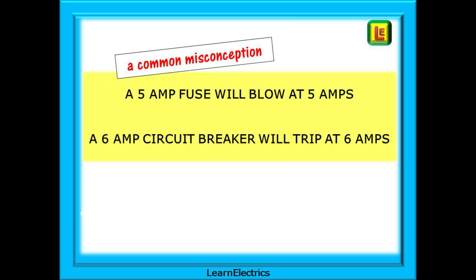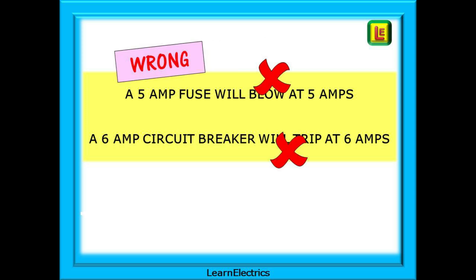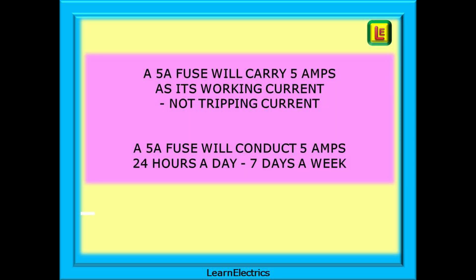There is a common misconception that a 5 amp fuse will blow at 5 amps and a 6 amp circuit breaker will trip at 6 amps and so on. This is wrong so let's look at this in steps. A 5 amp fuse will carry 5 amps as its working current, not the tripping current.